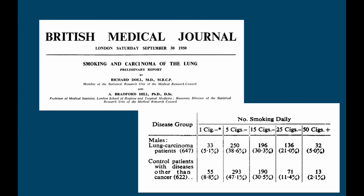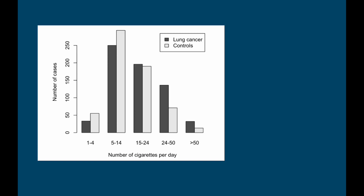Just looking at these data it's kind of hard to see what's going on, so it's probably best to draw a bar plot. This is the number of cases from the lung cancer group with the dark bars and the controls with the pale bars who smoked a particular number of cigarettes a day, and what you can see is that there seems to be a pattern. People who reported smoking large numbers of cigarettes — the more than fifty class or the twenty-four to fifty class — a lot more of the lung cancer patients fell into this category. Equally, in the classes of people who reported smoking small numbers of cigarettes per day the number of control patients is higher, and in the middle category of fifteen to twenty-four cigarettes a day the numbers are roughly equal.